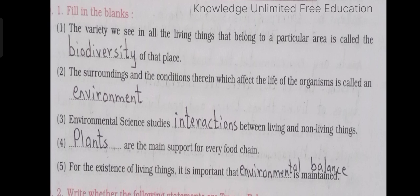Number 2: The surroundings and the conditions therein which affect the life of the organism is called an dash. Answer: environment. Number 3: Environmental science studies dash between living and non-living things. Answer: interactions.